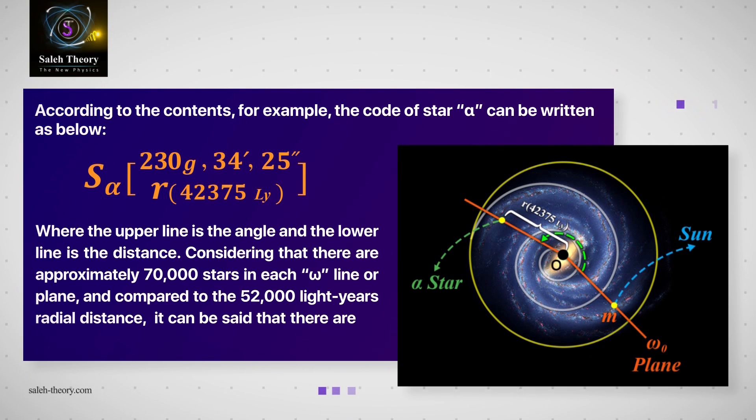According to the distance, for example, the code of star alpha can be written as shown, where the upper line is the angle and the lower line is the distance.